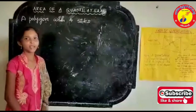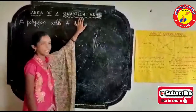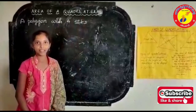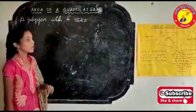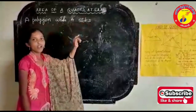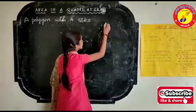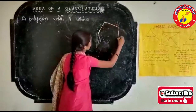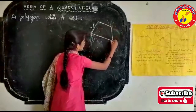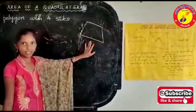Before discussing about this topic, we have to learn what is a quadrilateral. Friends, do you know what is a quadrilateral? A polygon with 4 sides is called as a quadrilateral. This is an example for quadrilateral.